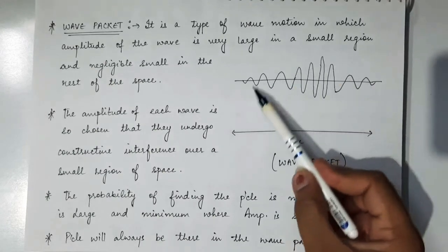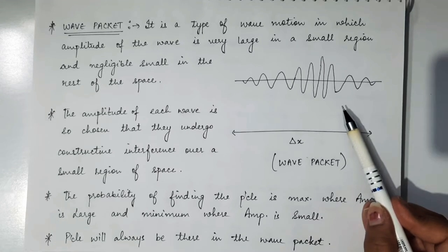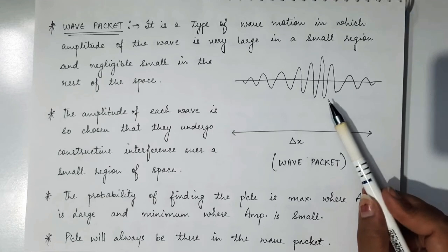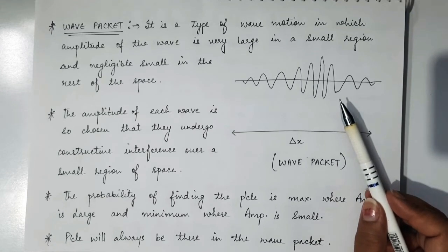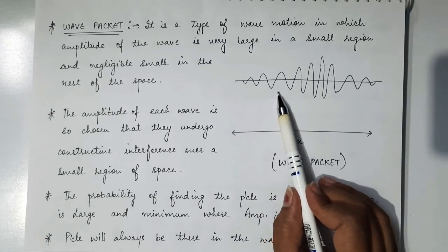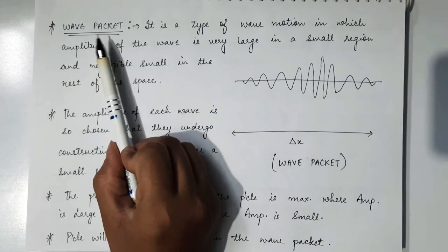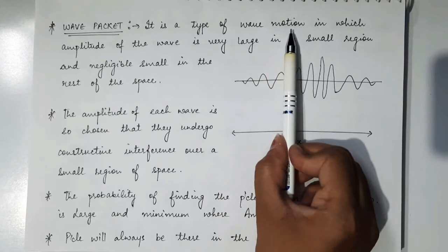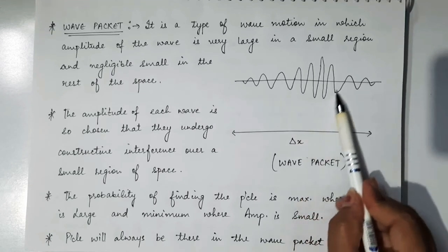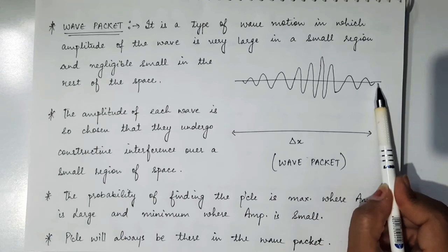This is the figure of a wave packet, which is the result of superposition or interference of various individual waves. Where the amplitude is maximum, there is constructive interference, and where the amplitude is minimum, there is destructive interference. Wave packet is a type of wave motion in which the amplitude of the wave is very large over a small region and negligibly small in the rest of space.